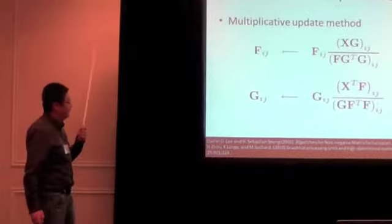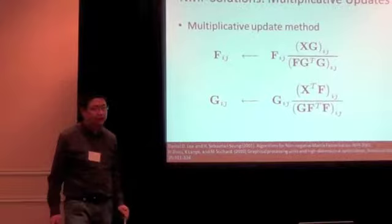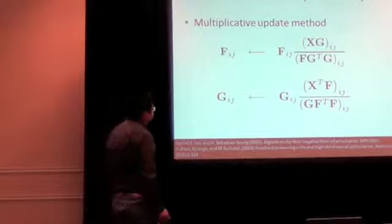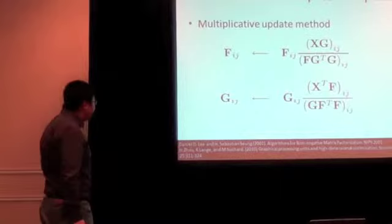One is the so-called multiplicative update. It basically initializes F and G with some random non-negative matrices, and then applies these two updating rules to update F and G alternatively until it converges.